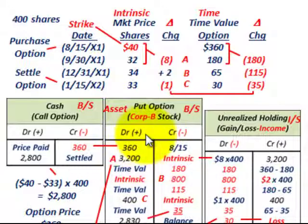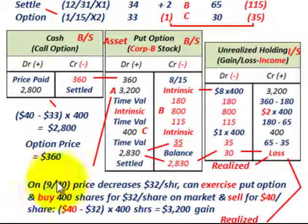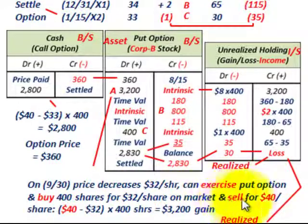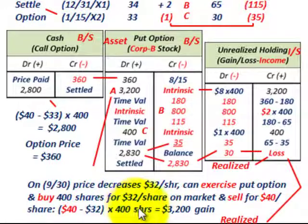Let's look at what the $3,200 amount really means. On the date 9/30, the price decreased to $32 per share, and we can exercise the put option and buy 400 shares at the $32 market price and sell them for $40 per share — the strike price. So the difference: the $40 strike price less the market price of $32, times those 400 shares, gives us that $3,200 gain recorded in our put option account.